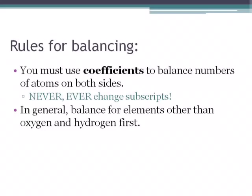Rules for balancing: you must use coefficients to balance the numbers of atoms on both sides of the equation. Coefficients are big numbers that we put in front of chemical formulas. You don't ever change the subscripts. If you're not sure what a coefficient and a subscript are, please review the video called Counting Atoms. In general, when balancing, balance for elements other than oxygen and hydrogen first.